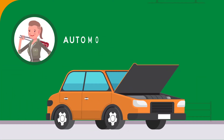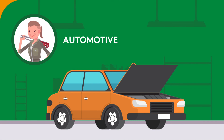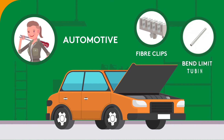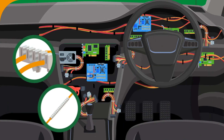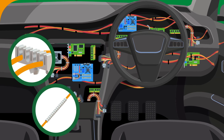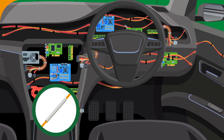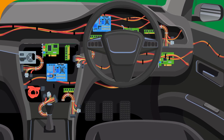For automotive, products such as fibre clips and bend-limit tubing are often used. They are for end-use electrical areas around the dashboard and doors.